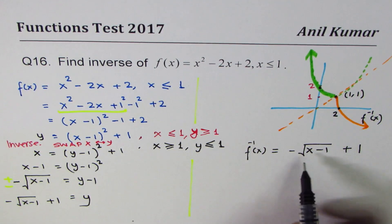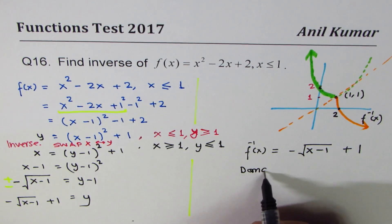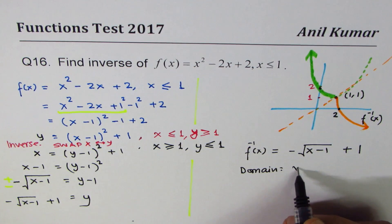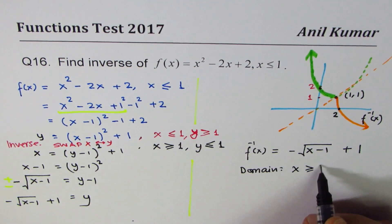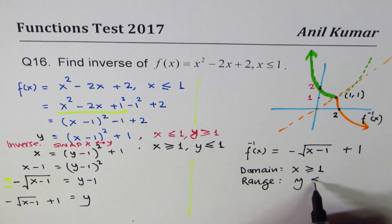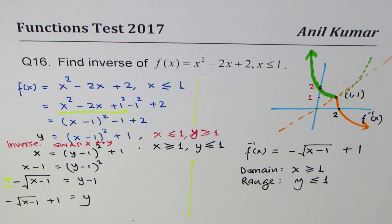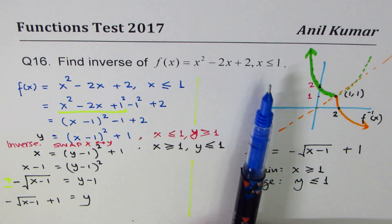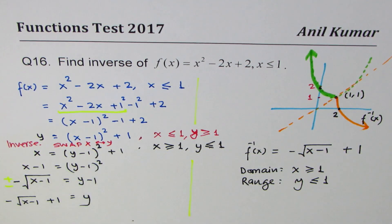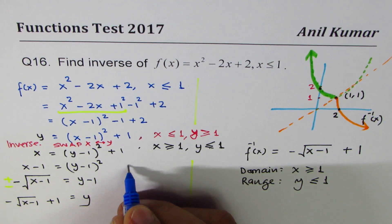You can see here that for this particular function, what is the domain? The inside part should always be non-negative, so x ≥ 1. As far as range is concerned, you can see y ≤ 1 as expected.